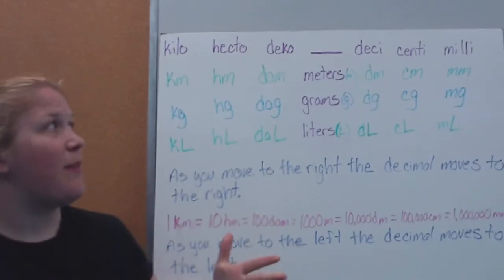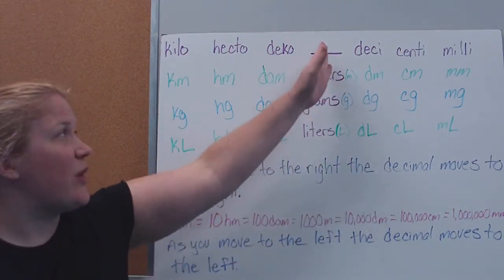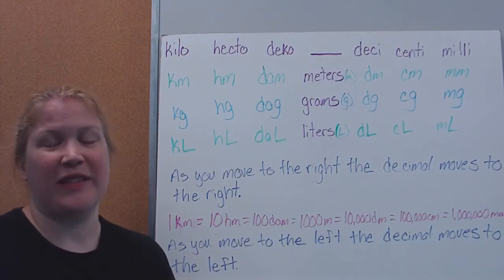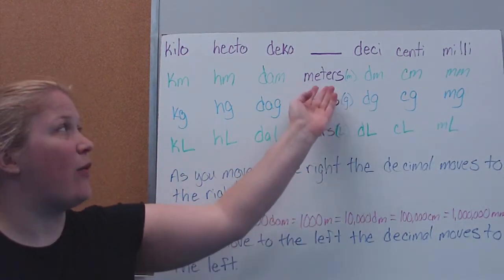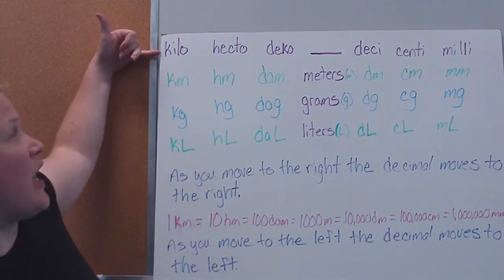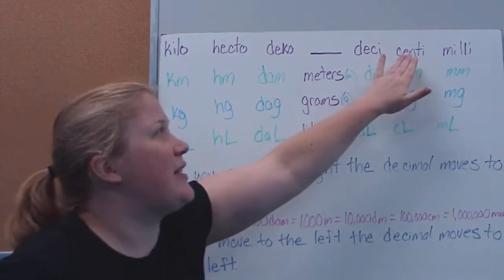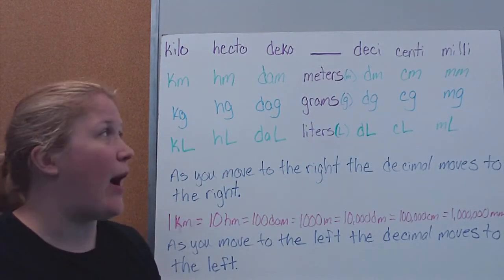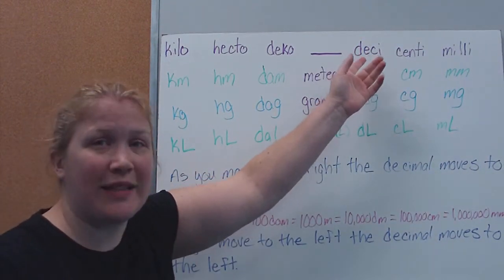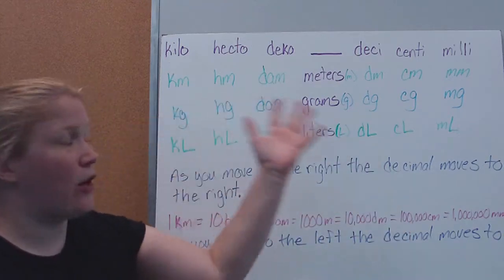Here I've given you the metric chart. In the metric system, there are certain prefixes that tell us how big something is. In the middle is where we have our plain measure — either meters, grams, or liters — and we use the same prefixes regardless. On the large end we start with kilo, hecto, deca, then getting smaller: deci, centi, and milli. Each step goes up by a power of 10 — there are 10 millimeters in one centimeter, 10 centimeters in one decimeter, 10 decimeters in one meter.